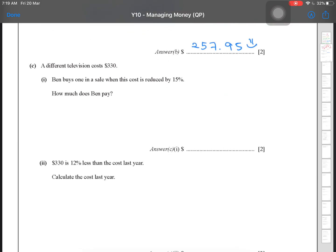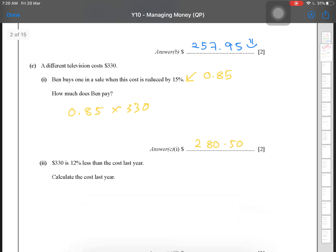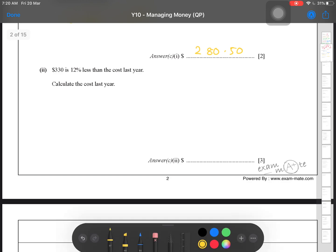A different TV costs $330. Ben buys one in a sale when this cost is reduced by 15%. So you start with 100% reduced by 15%. That means he bought a TV with 85% of the entire value. So 0.85 times 330, and this will give you 280.50.